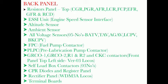Back panel — Resistors panel: CGR, PGR, AFR, LCR, FCP, EFR, GFR and RCD. ESSI Unit — Engine Speed Sensor Interface. Altitude sensor, ambient sensor. All voltage sensors: R5, BATV, TAV, AGAV, LCPV, BKCPV. FPC — Fuel Pump Contactor. PLPC — Pre-Lubrication Pump Contactor. GRCO1, GRCO2, R1, R2 and CKC contactors.